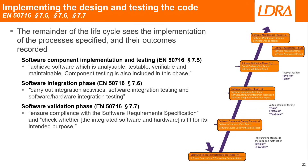EN50716 sections 7.5, 7.6, and 7.7 define quite a lot of the activity associated with compliance, but they actually occupy relatively little of the standard document itself. So the software component implementation and testing, software integration, and software validation phases implement what has been described before.